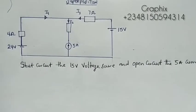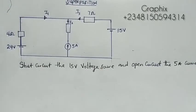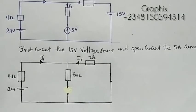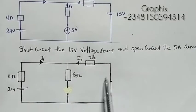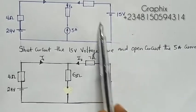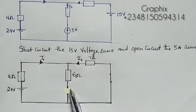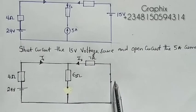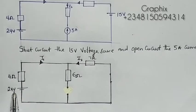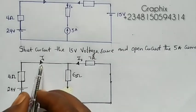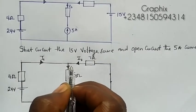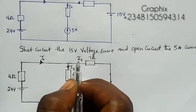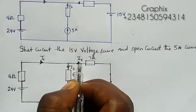In doing that, this is what we'll be having. I short circuit the 15-volt source — that means I replace that element with a wire. Since the current source is open-circuited, I am now allowing only the 24 volts to supply the circuit. Current flows this way as i2, and this way as i3.